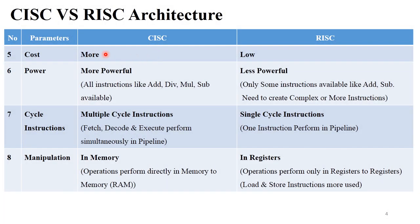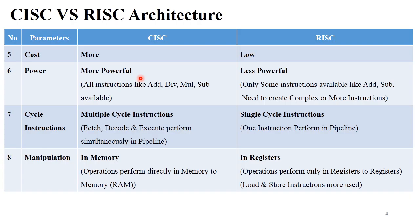The next point is cost. CISC requires a greater number of instructions, which is why it requires more cost. In contrast, Reduced Instruction Set Computer requires fewer or fixed-length instructions, giving it lower cost. Next is power: CISC processor architecture is more powerful compared to RISC because CISC supports all instructions — addition, division, multiplication, subtraction — all available by default and directly usable via their libraries. In RISC, only some instructions are present like addition or subtraction, so if you need to perform multiplication, you need to create more complex instructions. Therefore CISC is more powerful compared to RISC.